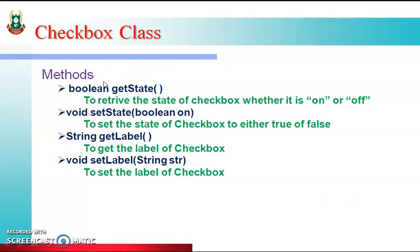Checkbox के साथ operations के लिए methods provided हैं। getState() method: retrieve करती है checkbox की state, whether it is on or off। setState() method: boolean parameter लेती है, true या false — run time में state set करने के लिए। getLabel() method: checkbox का label retrieve करती है। setLabel() method: run time में checkbox का label set करती है। These are the four methods which work with the checkbox.